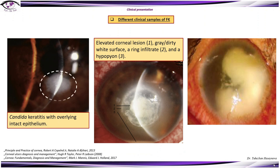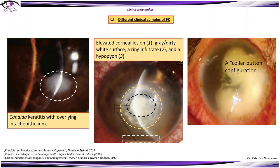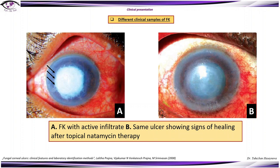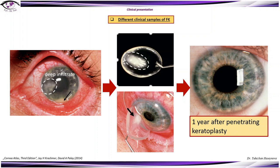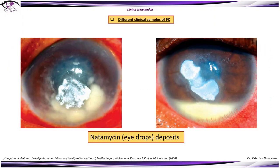Here we can see Candida keratitis with overlying intact epithelium, an elevated corneal lesion, a gray dirty-white surface with a ring infiltrate and hypopyon, and a collar button configuration of the infiltrate. In this slide, an active fungal infiltrate is shown along with the same case showing signs of healing after topical natamycin therapy. Another case shows a deep infiltrate and ulcer with hypopyon caused by Cephalosporium infection that did not respond to medical treatment, requiring penetrating keratoplasty.